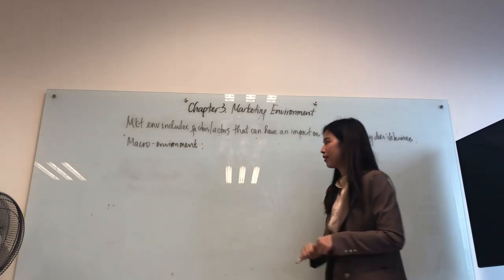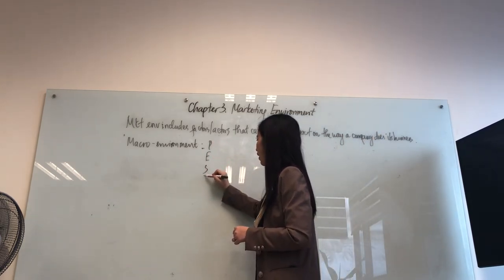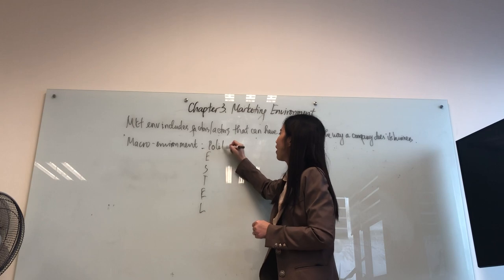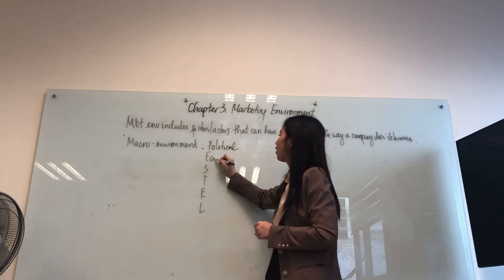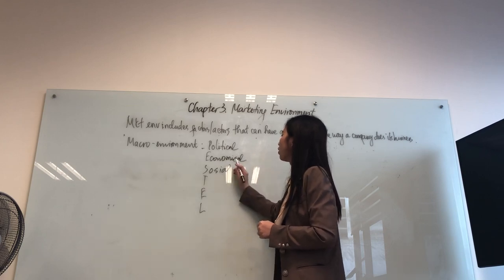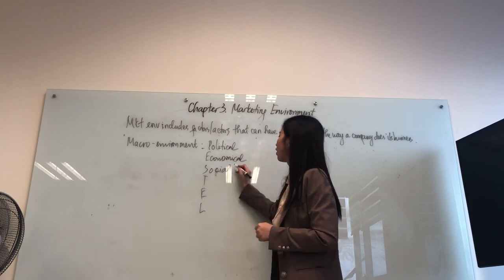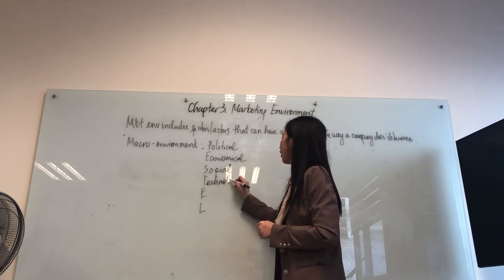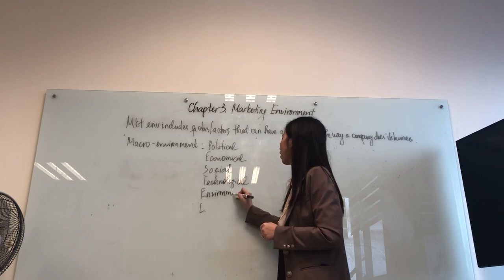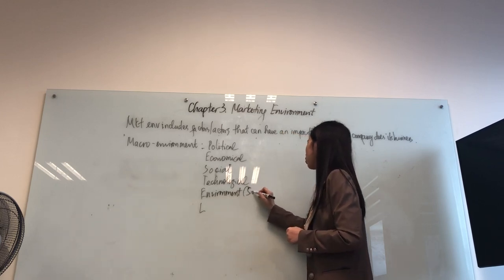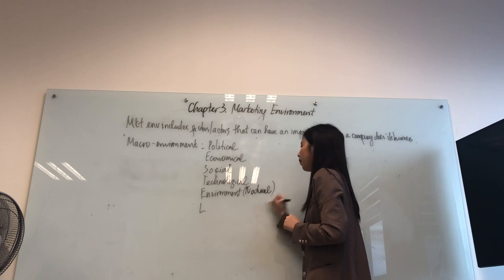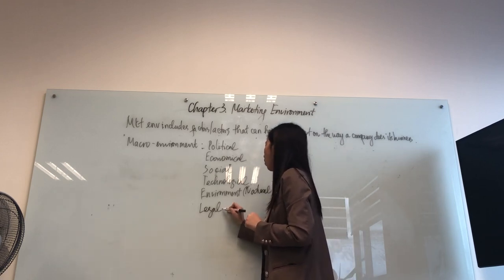Now let's move on to the macro environment. The macro environment includes factors often studied using the PESTEL framework — P stands for political environment, E for economical environment, S for social environment, T for technological environment, the next E for the natural environment, and L for the legal environment.